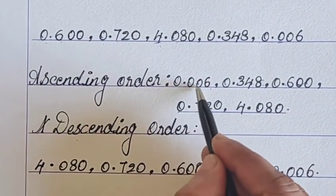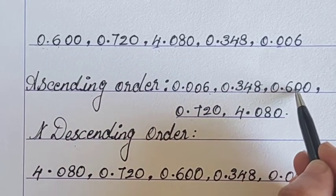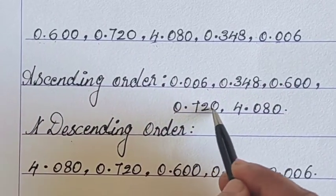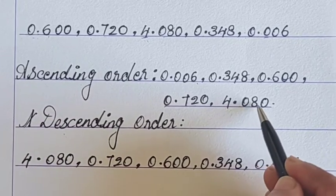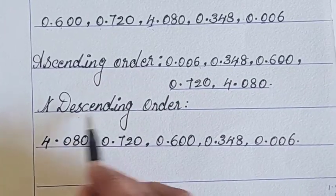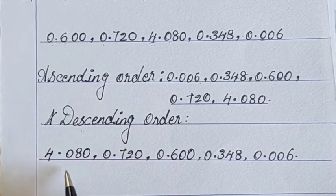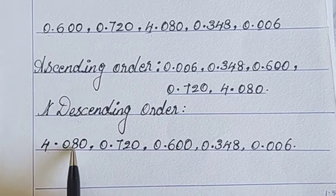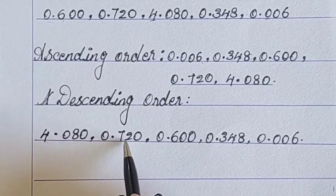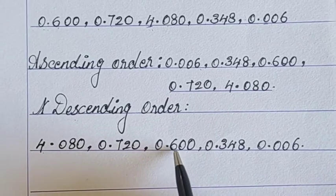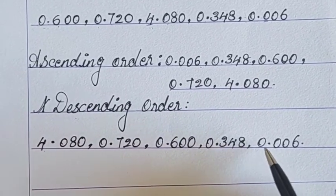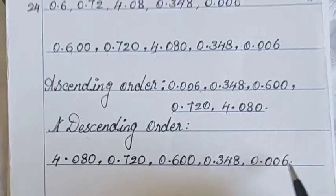So ascending order: 0.006, 0.348, 0.600, 0.720, 4.080. Descending order, the opposite of ascending order. Biggest number, 4.080, 0.720, 0.600, 0.348, and 0.006.